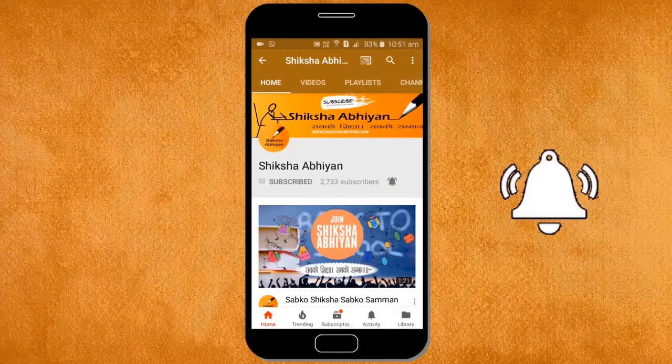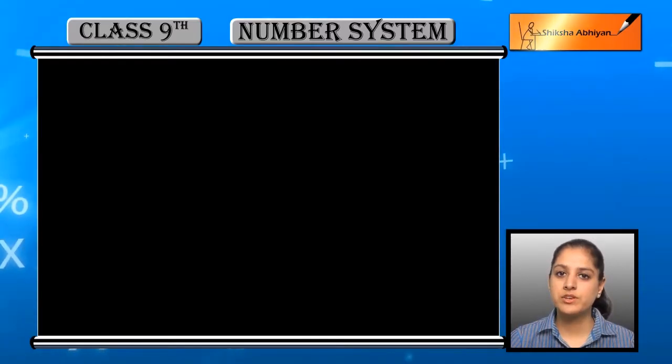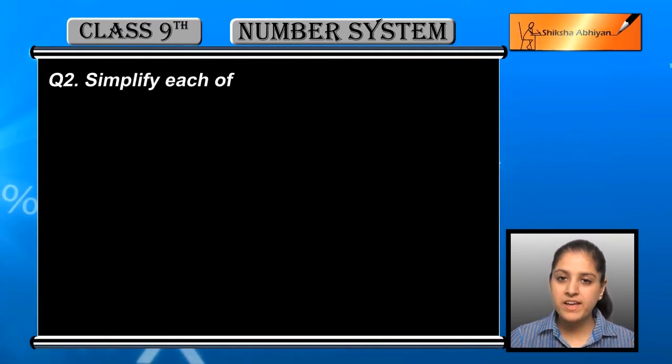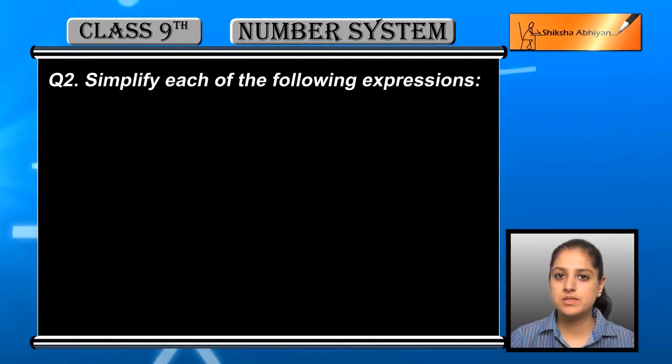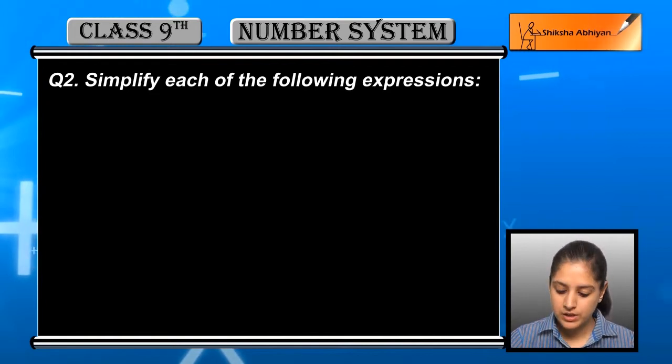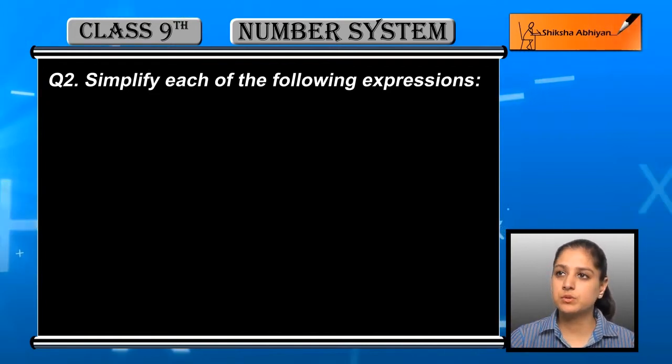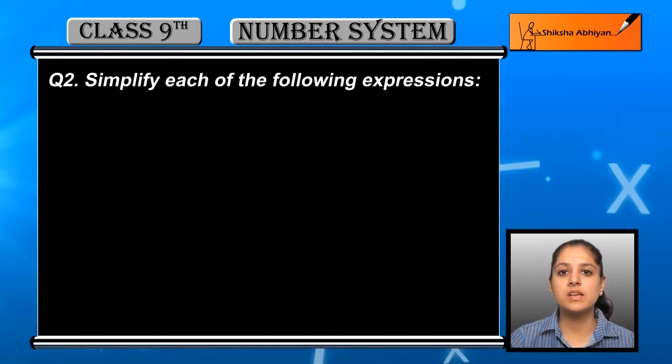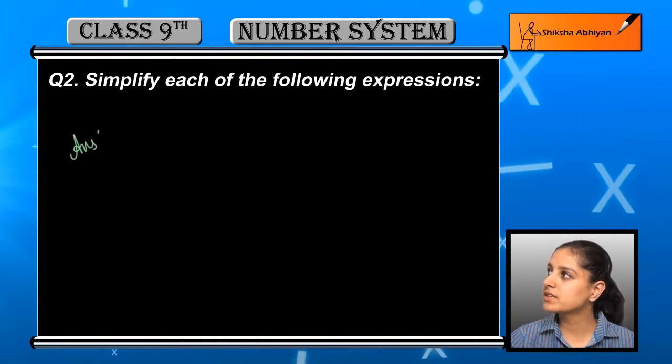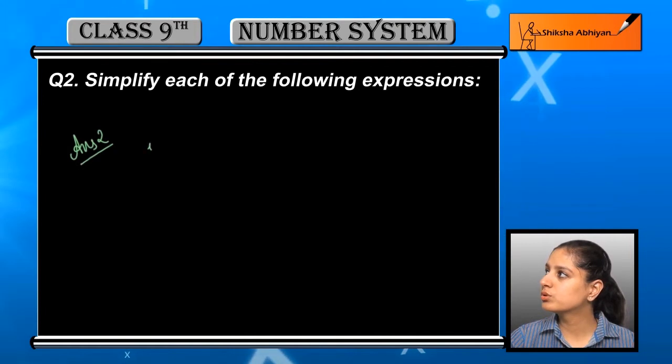Question number two: simplify each of the following expressions. We have to simplify the expressions. The first expression that is given to us is (3 + √3)(2 + √2). We'll use identities to simplify.